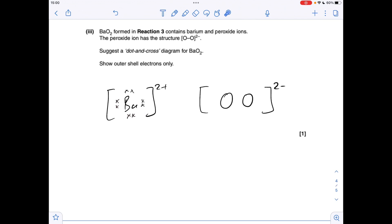So I've used crosses for barium, so I'm going to use open circles and shaded circles. So let's say the left-hand oxygen is an open circle, the right-hand one is a shaded one. So that's that single covalent bond there.